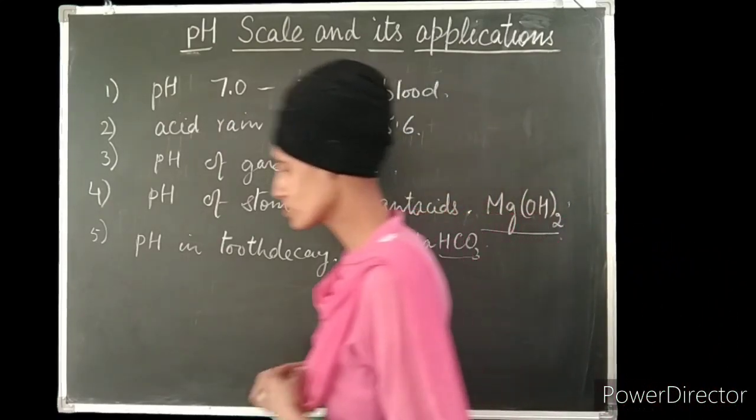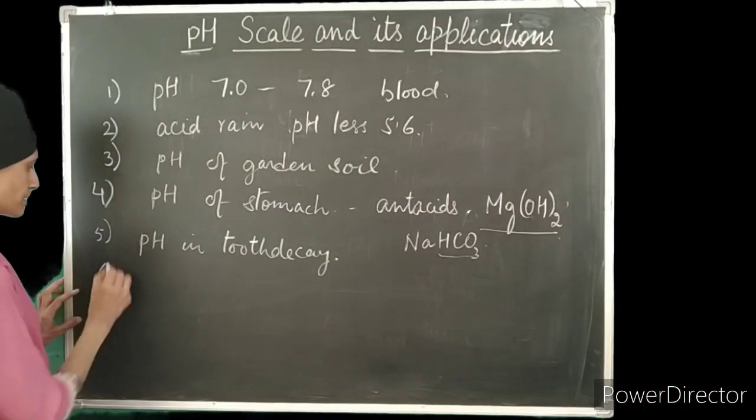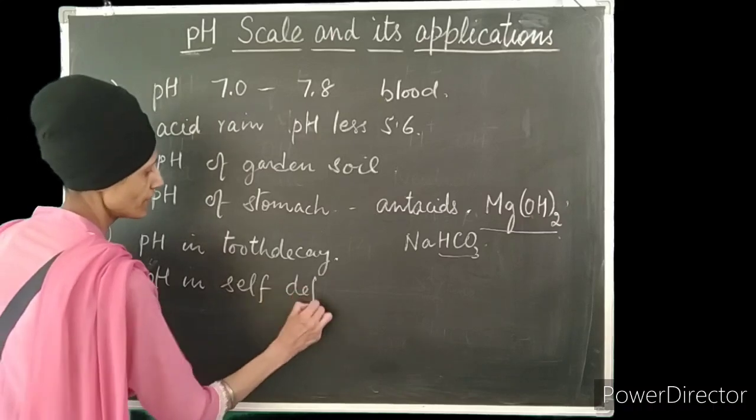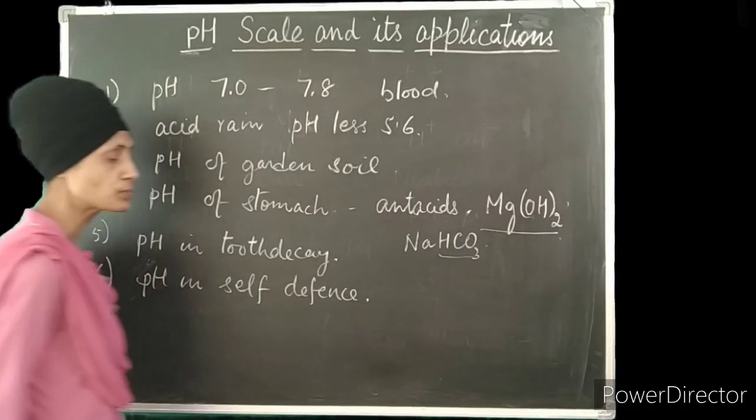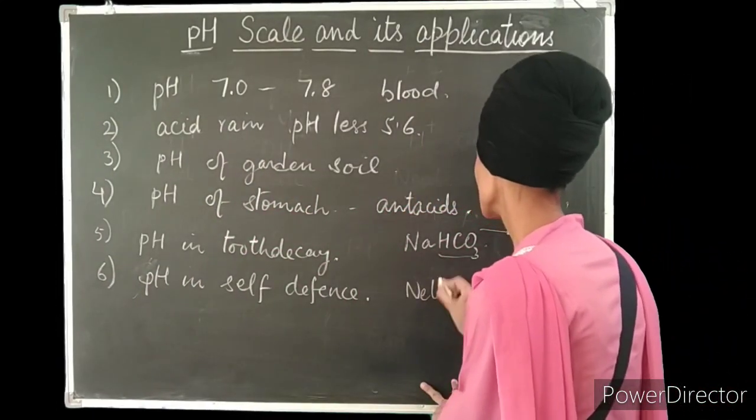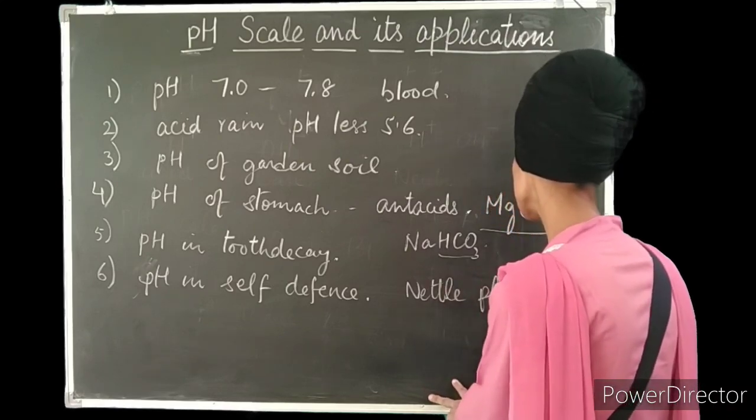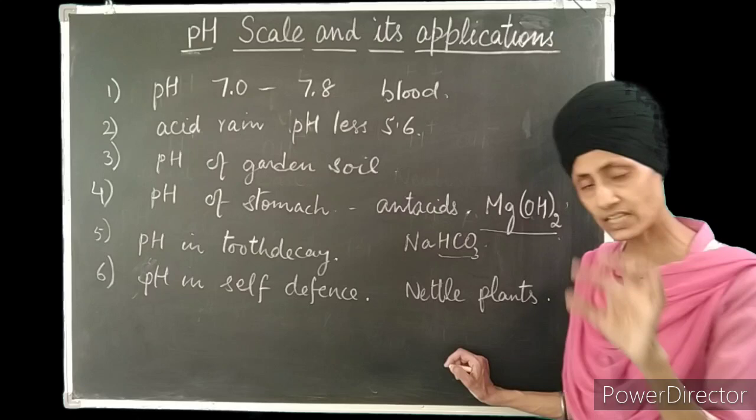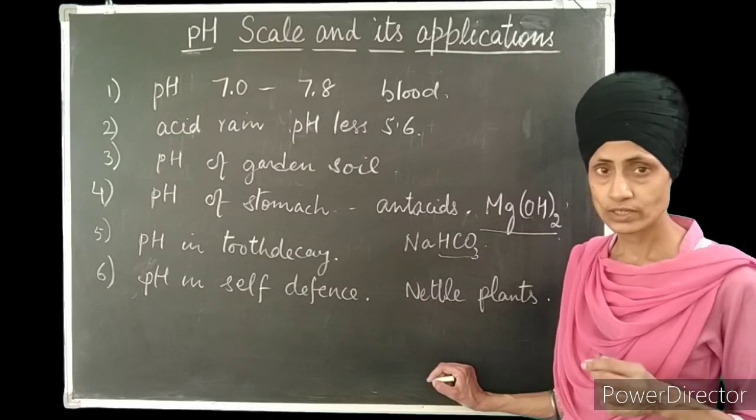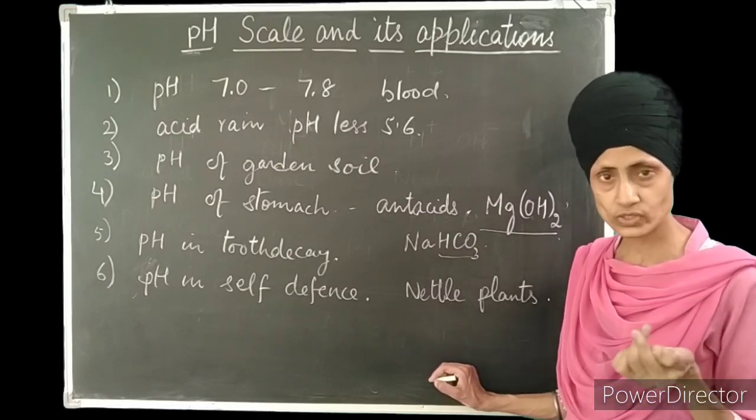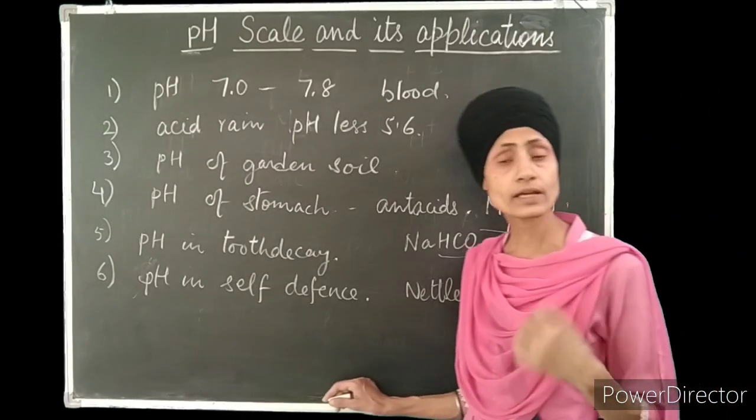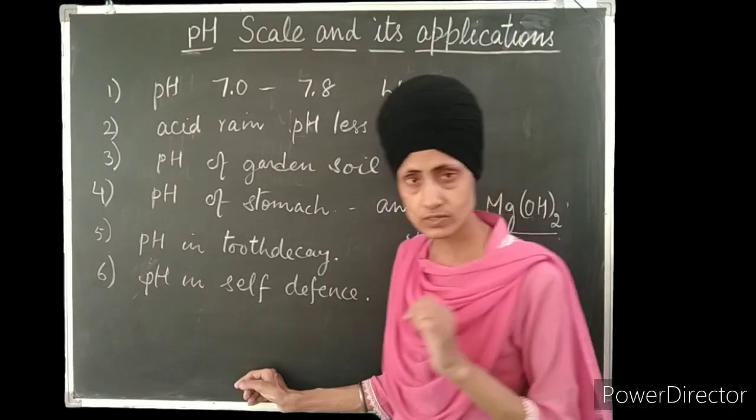And the last application that we see in the daily life is pH in self-defense by a few plants and animals. There are few plants which have stingy leaves like nettle plant. The nettle plant has stings on it which when touched cause irritation on our hands. This is because the nettle sting has methanoic acid in it. It injects that methanoic acid into our skin which causes irritation and pain to us.